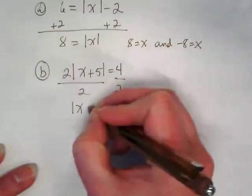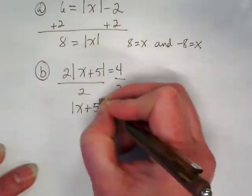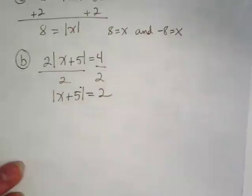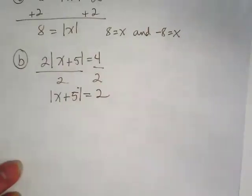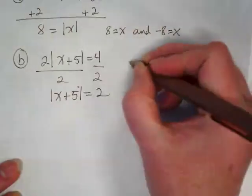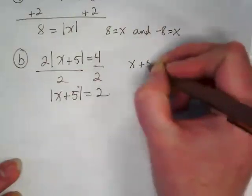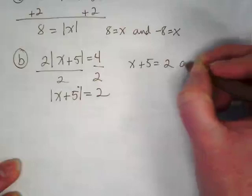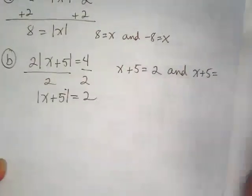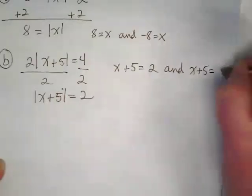That leaves me with the absolute value of X plus 5 is equal to 2. Once my absolute value bracket set is isolated, I'm going to rewrite it as X plus 5 is equal to 2 and X plus 5 is equal to what? Negative 2.